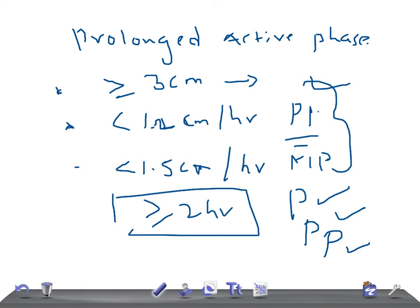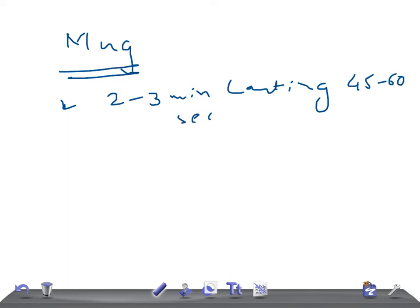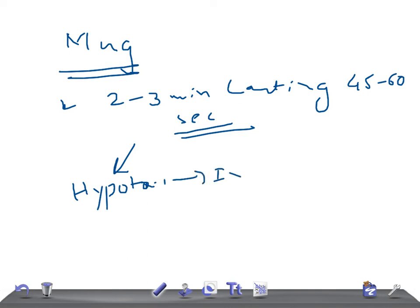Management is directed at the assessment of uterine contraction quality. Contractions should occur every two to three minutes, lasting 45 to 60 seconds, with 50 mmHg of intensity. If the powers are hypotonic, IV oxytocin is given. If the contractions are hypertonic, morphine is given.